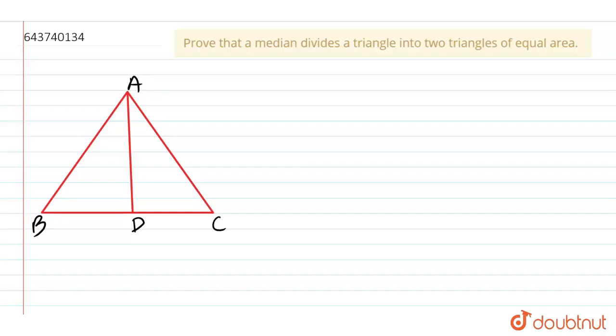Hello guys, prove that a median divides a triangle into two triangles of equal area. So as you can see on the screen, we have taken a triangle A, B, and C with its median AD. So let us write it down. AD is the median and as we know a median divides the side of a triangle into two equal parts.